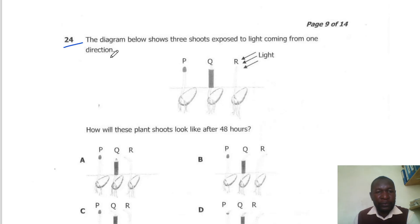Question 24. The diagram below shows three shoots exposed to light coming from one direction. How will these plant shoots look like after 48 hours? R will bend towards the light because it contains auxin. Q will also bend towards the light because it contains auxin. For P, it will remain the same because the tip has been cut off. So the correct answer here is B.